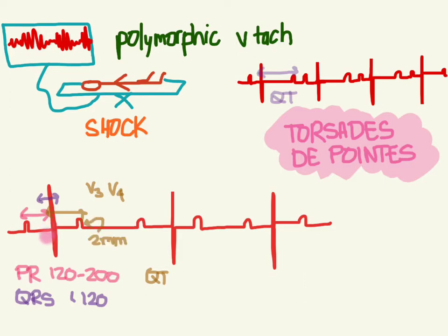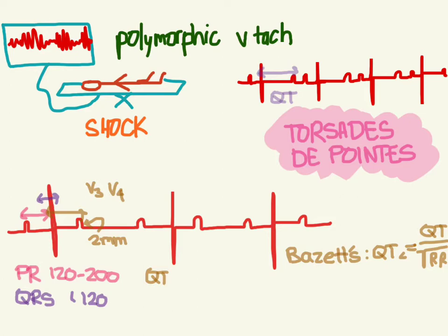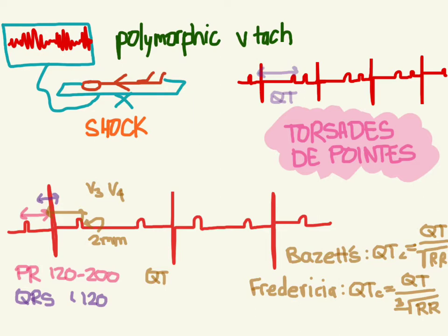This measurement is taken from the beginning of the Q to the end of the T, and it is very rate dependent — you need to correct for the rate. There are various formulas to do this. The first one is called the Bazett's formula, and that is the measured QT over the square root of the RR distance. The formula is actually a little more complicated — you have to take the average of three consecutive beats in three contiguous leads, so you'd be calculating square roots nine times. Another problem is that it's not very accurate when the patient is very bradycardic or tachycardic. There's another formula called the Fredericia one, which takes the cube root of the RR. There are even nomograms — graphs you can look at — that can help you figure out what the corrected QTc is.